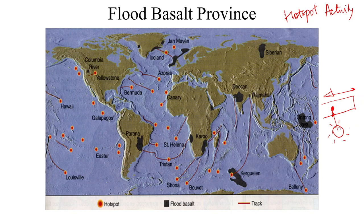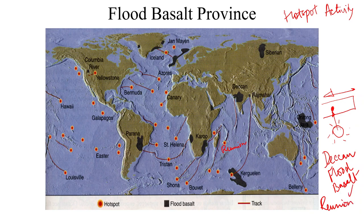The Deccan flood basalts were formed by the Réunion hotspot. Similarly, the Rajmahal traps were the result of the Kerguelen hotspot activity — these are now islands in the Indian Ocean. The Karoo flood basalts in southern Africa are the result of the Bouvet hotspot.